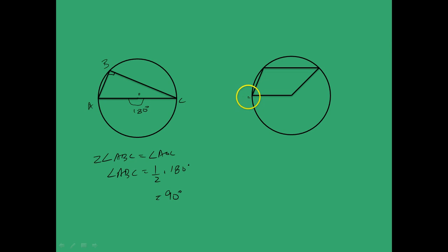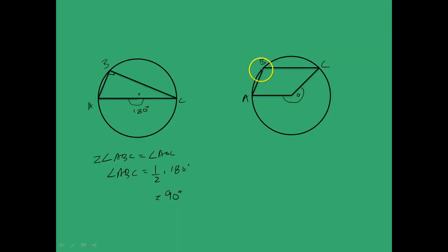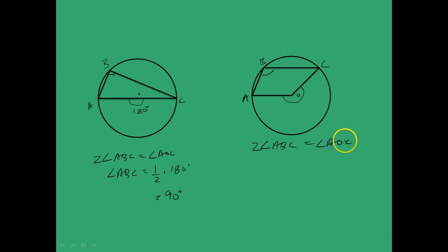Also, for the case of a major arc, the angle at the center is a reflex angle greater than 180 degrees. The theorem still holds under the same conditions — 2 times angle ABC equals angle AOC — but the angle AOC here is the reflex angle.